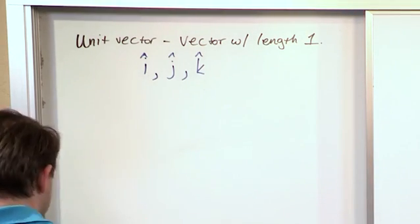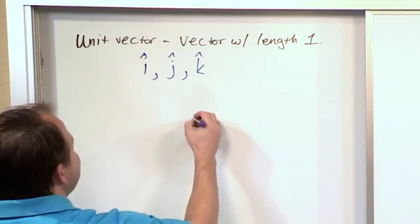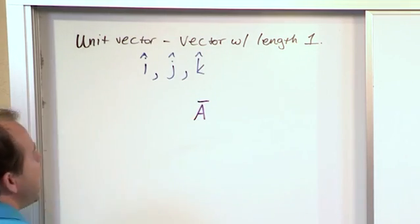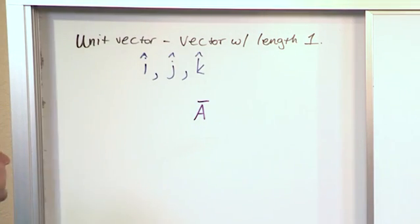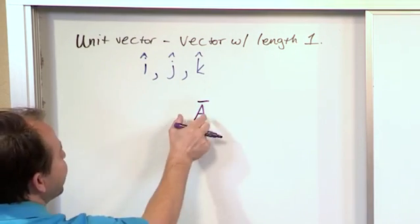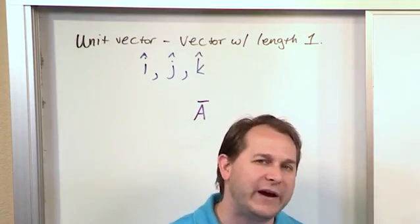So if I have, let me switch over to purple here, if I have a vector a, and we know that vector a may point in space any which way, any which direction that we want. And from the vector a, let's say we wish to find what a vector...